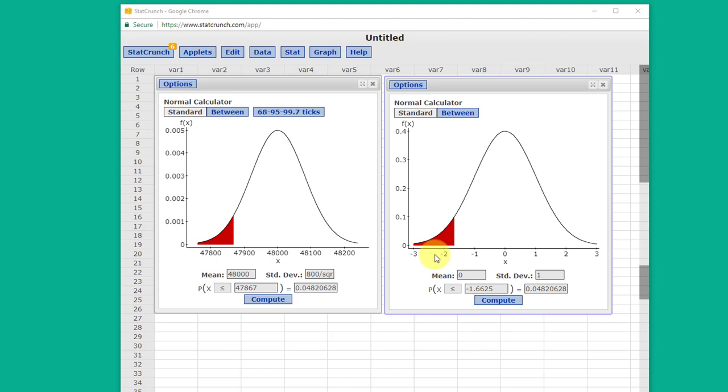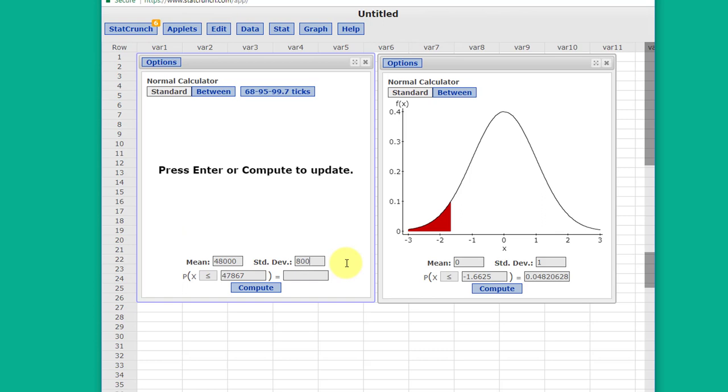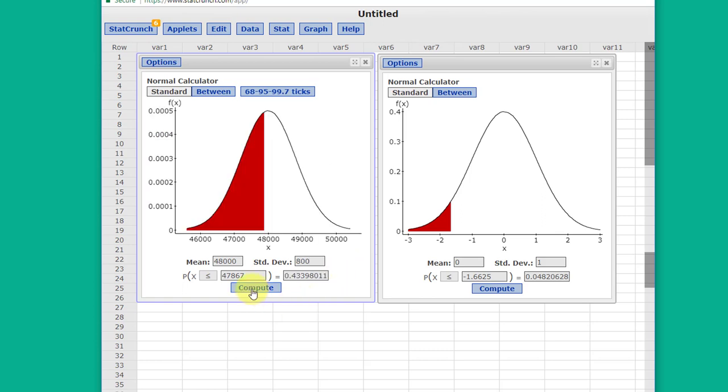Now let's do the last question. What is the probability of getting a single tire from that population with a mileage life of 47,867? We can do that using the two calculators I have there. I'm going to make this go back to just the population sigma of 800, click compute again, and you can see now that the area under the curve is point three three three, which is obviously not unusual.